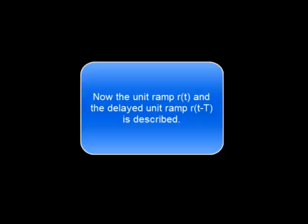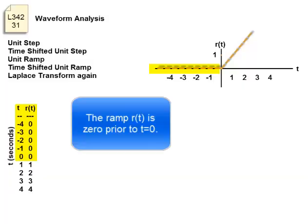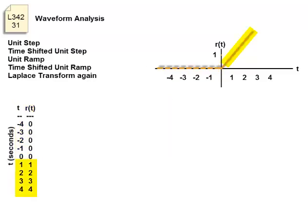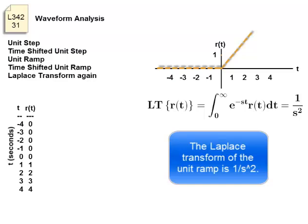Now the unit ramp and the delayed unit ramp is described. That's R of t and R of t minus T. The ramp is zero prior to t equals zero. The ramp is t after t equals zero. The Laplace transform of the unit ramp is one over s squared.